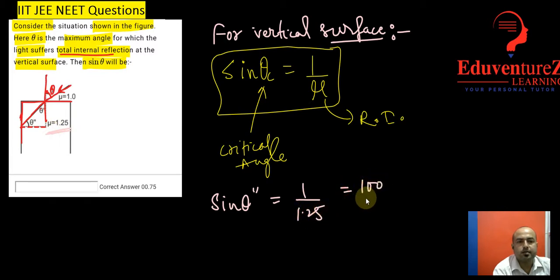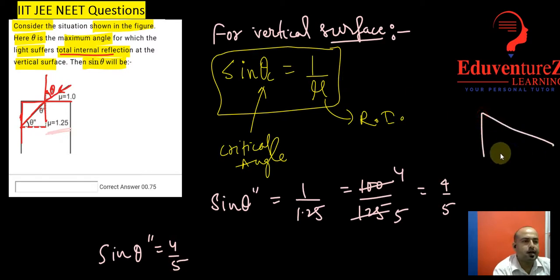We will write it as 100 upon 125, so 25 into 4, 25 into 5, so 4 upon 5. So here theta double dash, sine theta double dash is equals to 4 upon 5 and we know that for a right angle triangle,